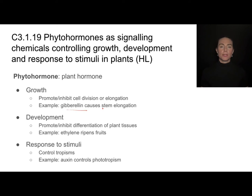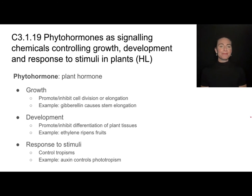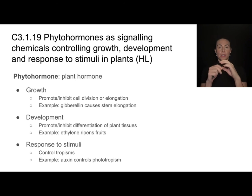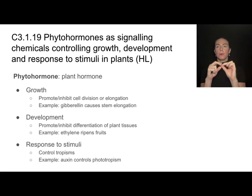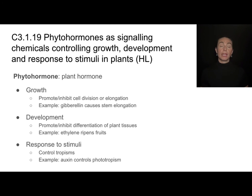For example, there's a hormone called gibberellin that causes stem elongation — the cells grow bigger and the plant grows taller. Phytohormones can also control plant development by promoting or inhibiting differentiation of plant tissues. Differentiation is a process where undifferentiated stem cells start to express certain genes, causing them to differentiate into different cell types such as a flower, a leaf, or phloem. An example of a phytohormone that influences differentiation is the gas ethylene.